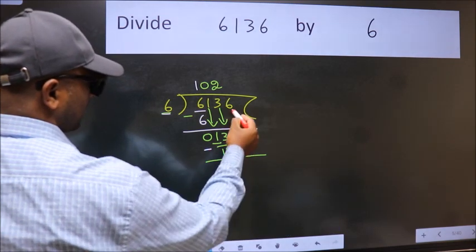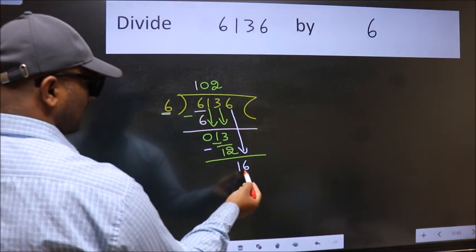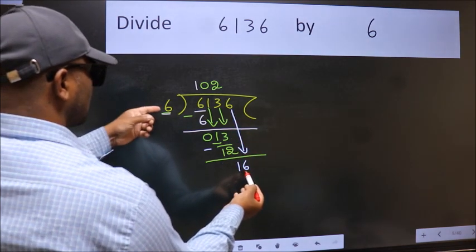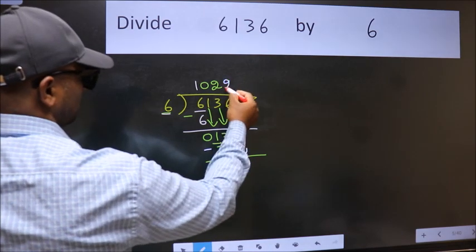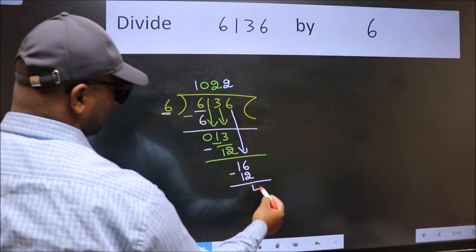After this bring down the beside number. So 6 down. 16. A number close to 16 in 6 table is 6, 2, 12. Now we subtract. We get 4.